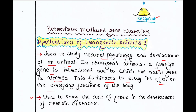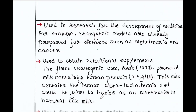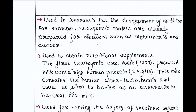Transgenic animals are also used to study the role of genes in the development of certain diseases. In this case you can insert a disease-causing gene into an animal and later determine how that gene causes the disease. They are also used in research for the development of medicines; for example, transgenic models have already been prepared for diseases such as Alzheimer's and cancer.